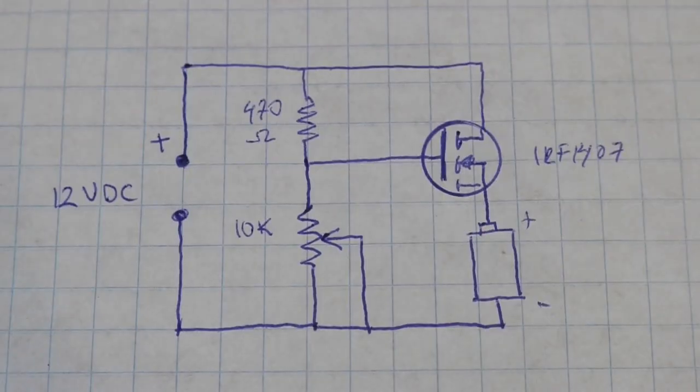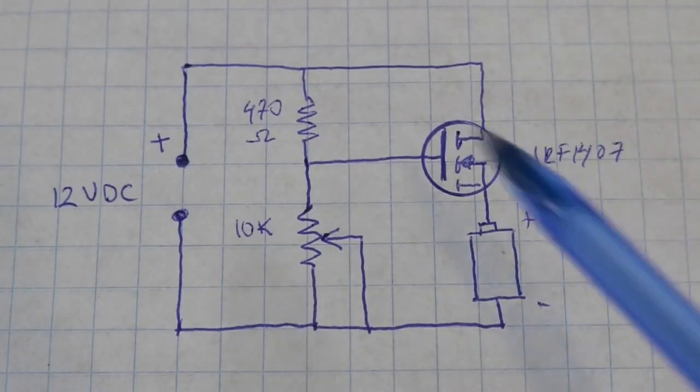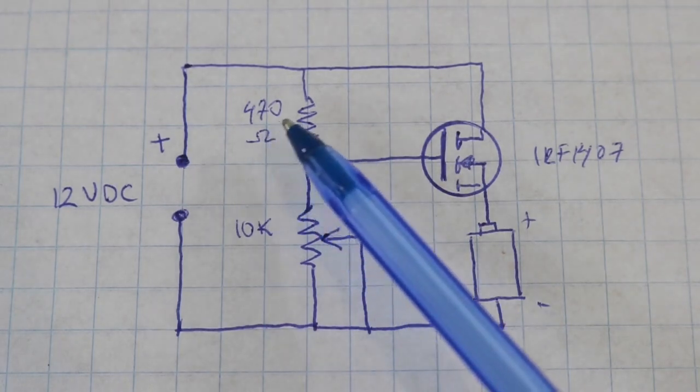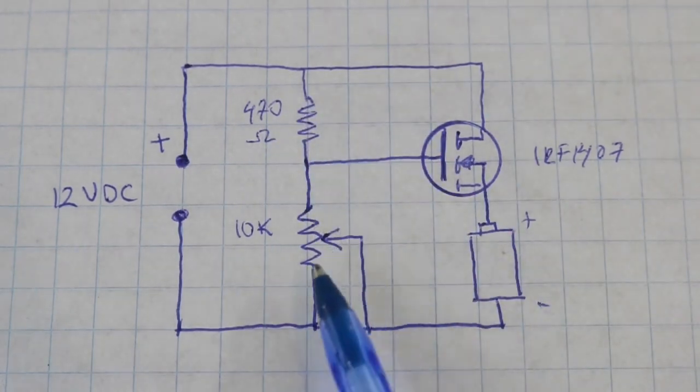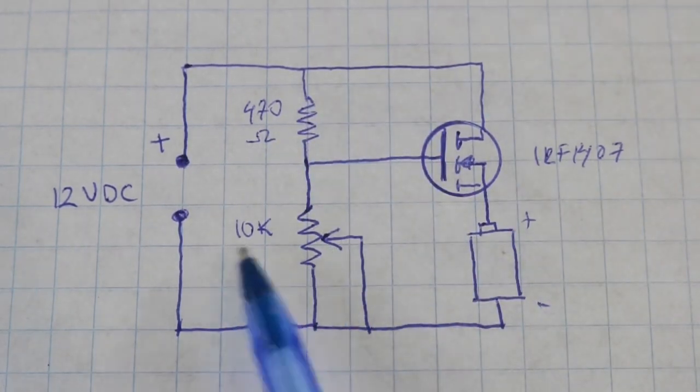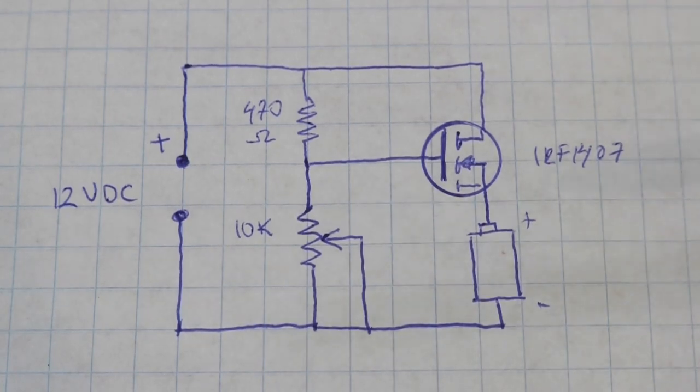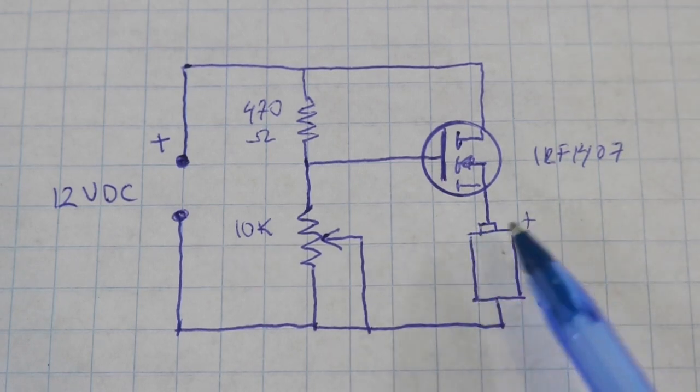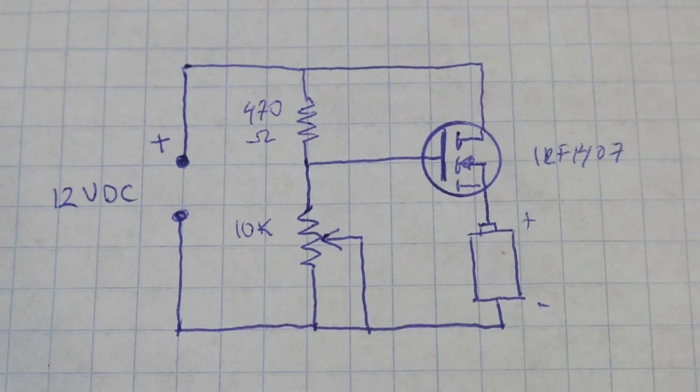Here is the schematic, very simple as you can see. Resistor 470 ohms, potentiometer 10 kilo ohms, and you can use any power MOSFET. I am using the IRF-1407, and at this point you connect your battery, positive and negative terminal.